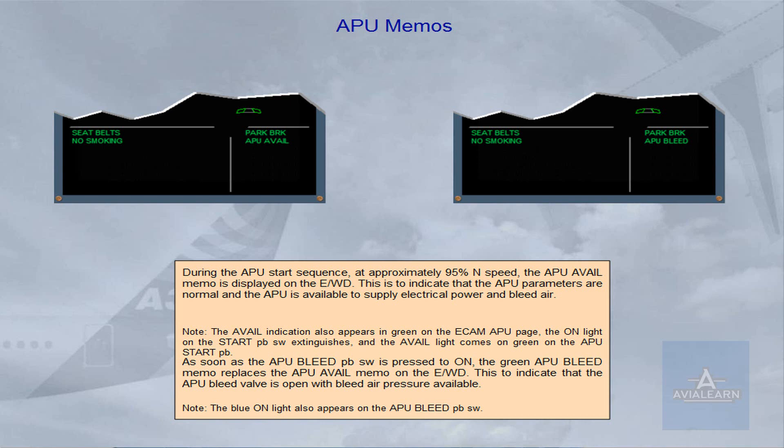During the APU start sequence, at approximately 95% end speed, the APU avail memo is displayed on the engine warning display. This indicates that the APU parameters are normal and the APU is available to supply electrical power and bleed air. The avail indication also appears in green on the ECAM APU page. The on light on the start push-button switch extinguishes, and the avail light comes on green on the APU start push-button.